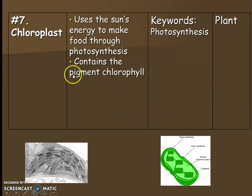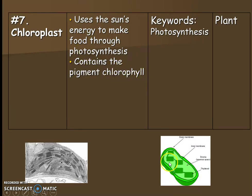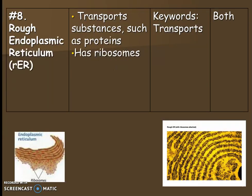Next, the chloroplast. A chloroplast uses the sun's energy to make food through photosynthesis. It also contains the pigment chlorophyll, which is the green stuff in chloroplasts. Chloroplasts look like a bean, similar to mitochondria, but they have pancake-looking internal structures. Chloroplasts are only found in plants because plants perform photosynthesis. There is no factory analogy for chloroplasts — it is blacked out on your sheet.